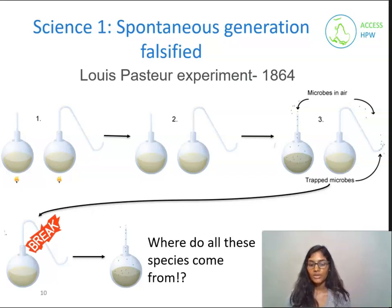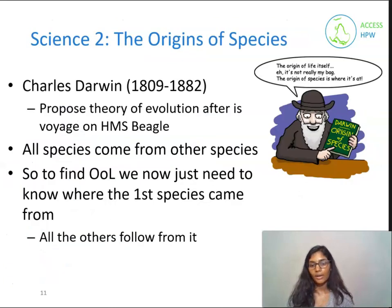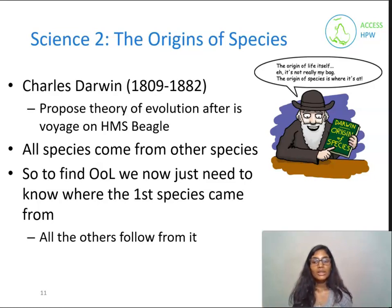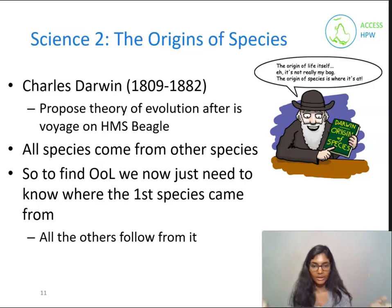But where do all these species come from? This is where Charles Darwin comes in with his theory on the evolution of species. While on the HMS Beagle, he made many observations, and the basic idea he came up with is that all species have come from one species — or that all species come from some other species. So there has to be one original organism that diversified and led to everything we see now. This makes our hunt for the origins of life a lot easier, as we don't have to find where each and every species came from — we just have to find that one original species.